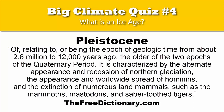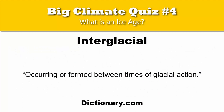The Holocene is the extremely short half. The FreeDictionary.com describes the Pleistocene as characterized by the alternate appearance and recession of northern glaciation, the appearance and worldwide spread of hominins, and the extinction of numerous land mammals such as the mammoths, mastodons, and saber-toothed tigers. Dictionary.com defines interglacial as occurring or formed between times of glacial action — ironically a very poor definition, because glacial action is unending so long as glaciers exist, and glaciers persist throughout interglacial periods.